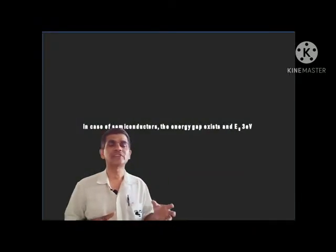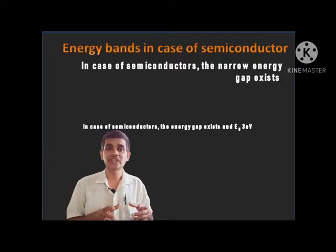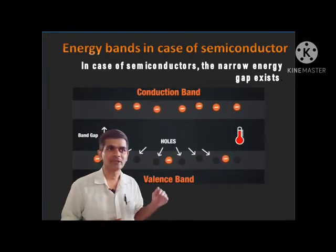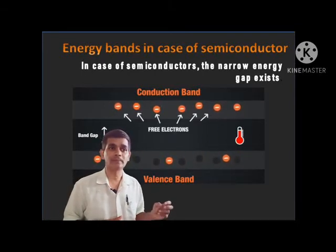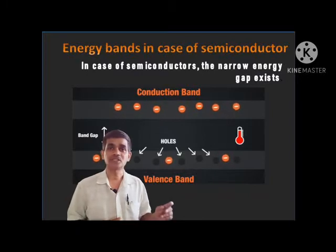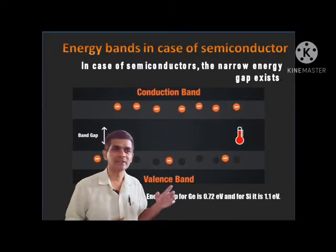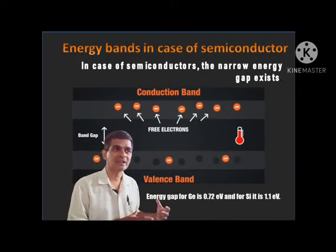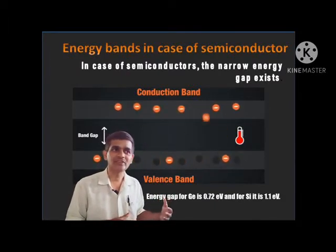Let us see the energy bands in the case of semiconductors. In case of semiconductor, a narrow energy gap exists between the valence band and conduction band. That energy gap is of the order of 0.72 electron volt for germanium, and for silicon the energy gap is 1.1 electron volt. Due to that reason, as temperature increases, electrons jump from the valence band to the conduction band, creating vacancies called holes.